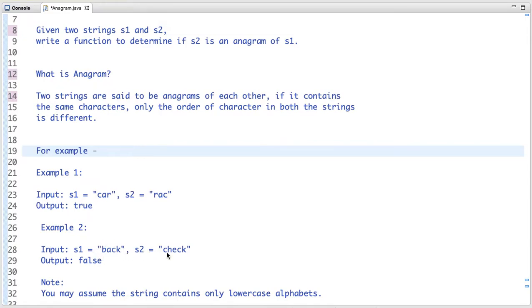In the second example, s2 is not an anagram of s1 as both strings contain different characters. If you see, 'h' is present in string s2 but it's not present in s1. Similarly, 'c' is present two times in s2 but it's only present once in s1.